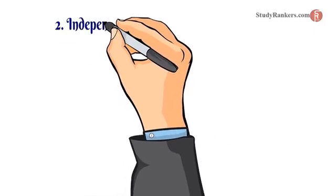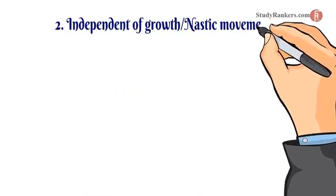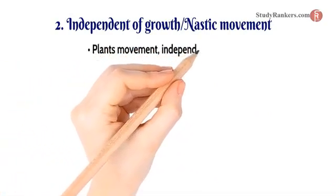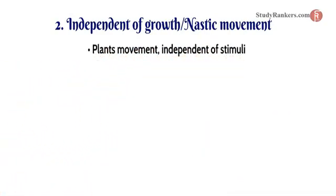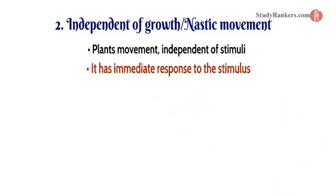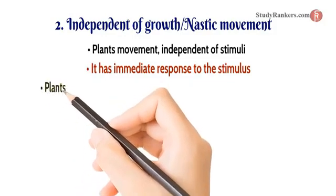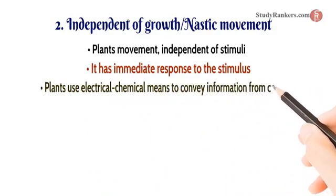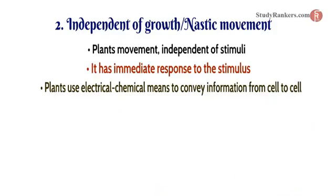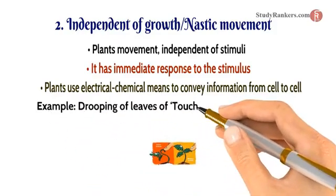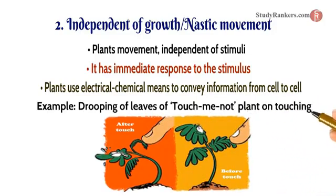The second type is independent of growth, also called nastic movement — plant movement independent of stimuli. This type has an immediate response to the stimulus, and plants use electrochemical means to convey information from cell to cell. For example, the drooping of leaves of the touch-me-not plant when touched.